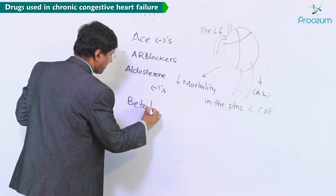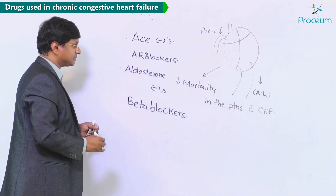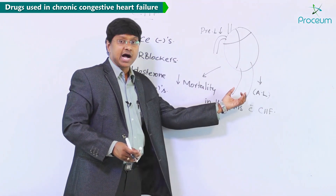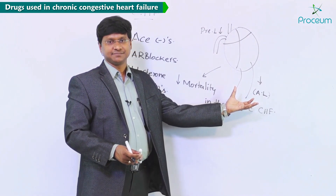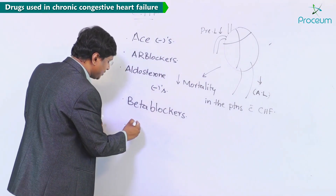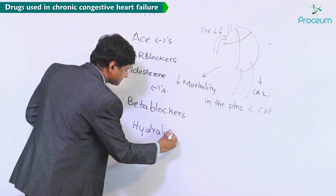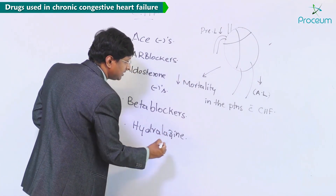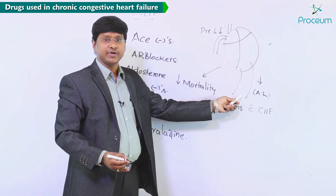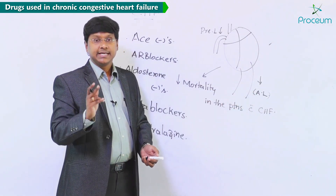We have another group of drugs which will cause arteriolar vasodilation. That group of drugs is hydralazine. Hydralazine causes arteriolar vasodilation and thereby reduces the afterload on the individual.